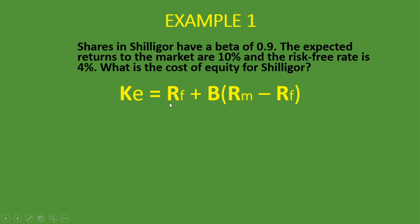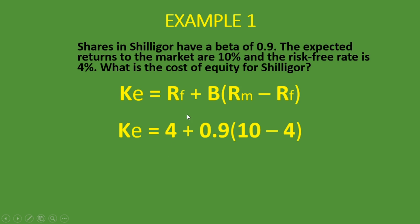KE is the cost of equity, and that's what we are asked to calculate. RF is the risk-free rate, which is 4%. So that RF is 4%, plus the beta, which is 0.9. Then open bracket — RM is the return on the market, which is 10% here, and RF is the risk-free rate again of 4%. So it's 4% plus 0.9, open bracket, 10 minus 4.